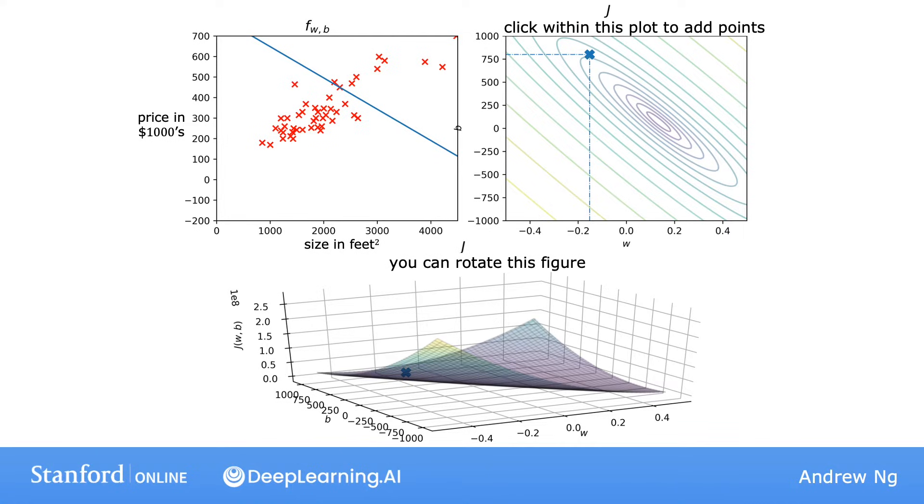Let's look at some more visualizations of W and B. Here's one example. Over here, you have a particular point on the graph J. For this point, W equals about negative 0.15, and B equals about 800. So this point corresponds to one pair of values for W and B that yields a particular cost J.